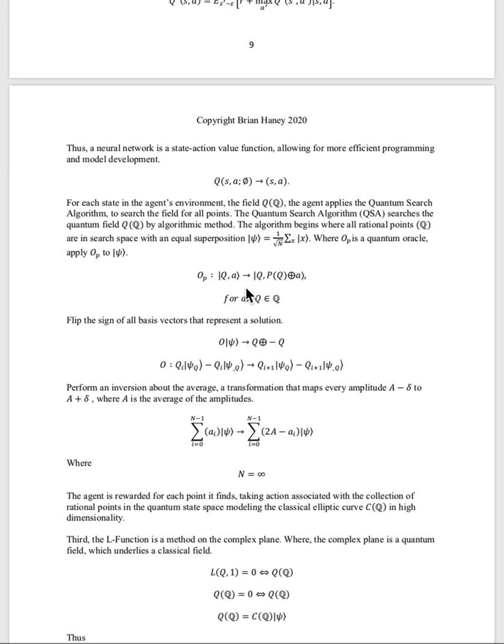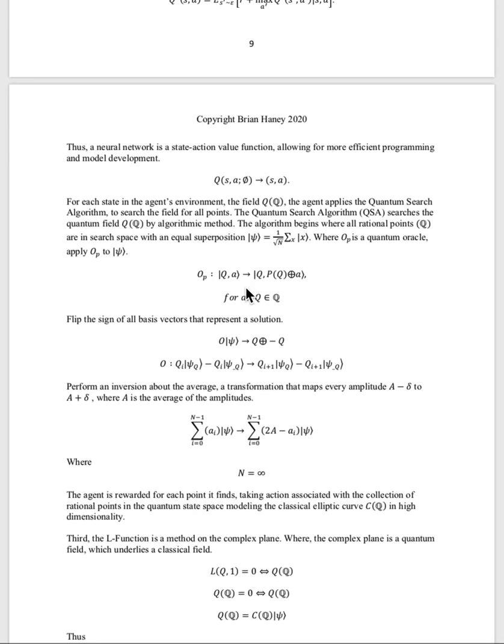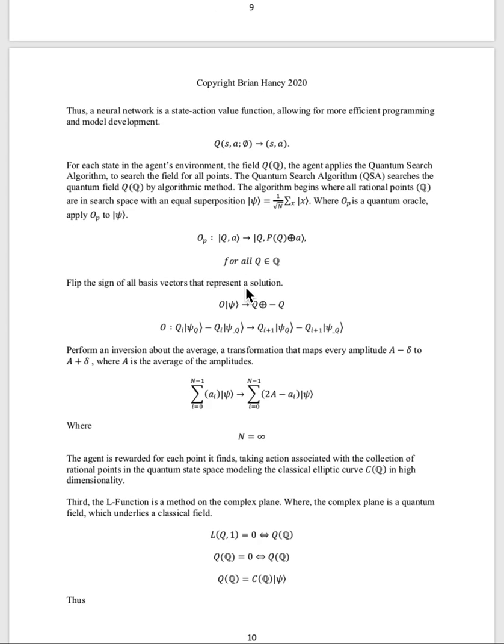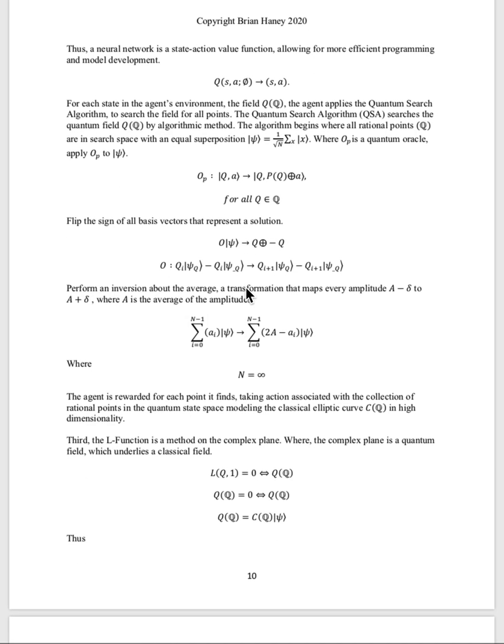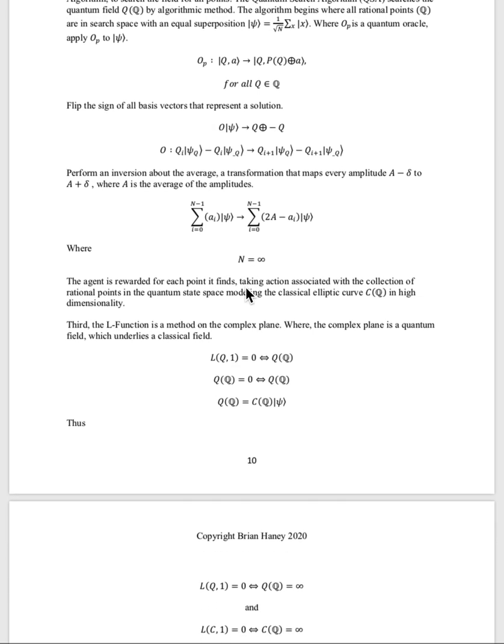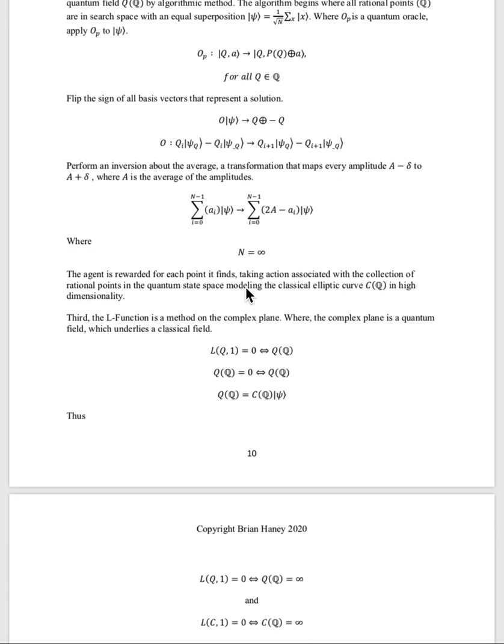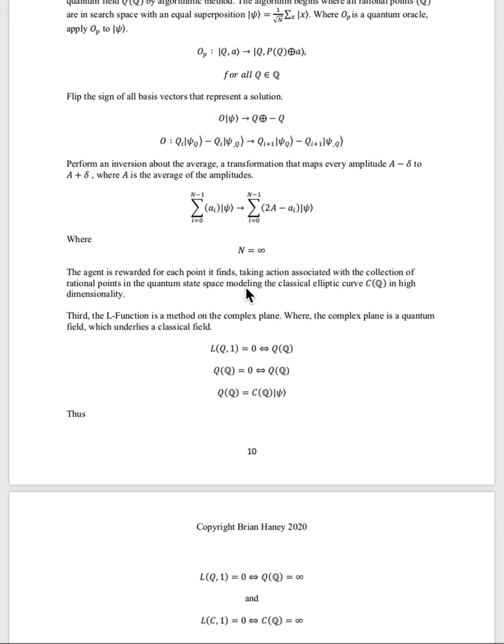As we can show, the classical field maps to the quantum field and these two systems are convertible. And as a result, the number of points on an elliptic curve are infinite.